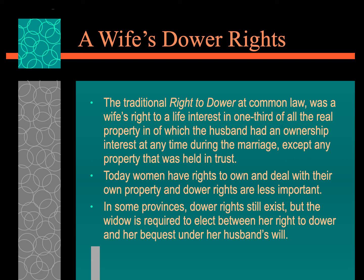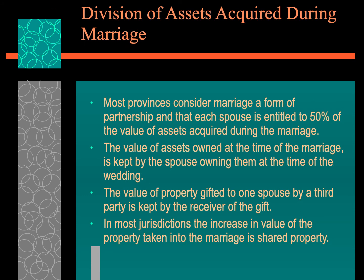When it comes to dower rights, you absolutely need a lawyer who is familiar with these matters. Most provinces consider the marriage a form of partnership, where each spouse is entitled to 50% of the value of assets shared during the marriage. The value of property owned before the marriage is kept by the spouse who owned it. Property gifted to one spouse by a third party is kept by the receiver of the gift. In most jurisdictions, any increase in the value of property is taken into account as shared property during the marriage.